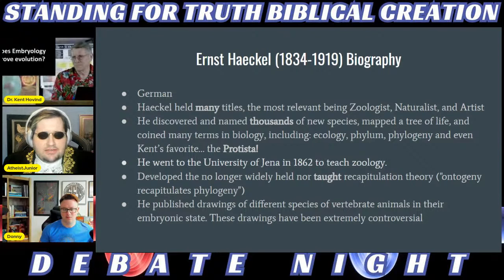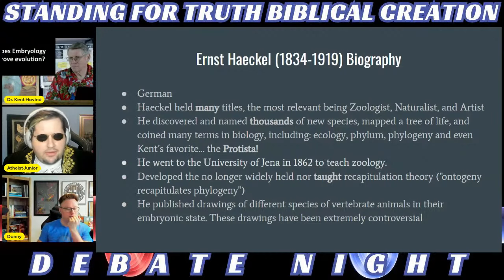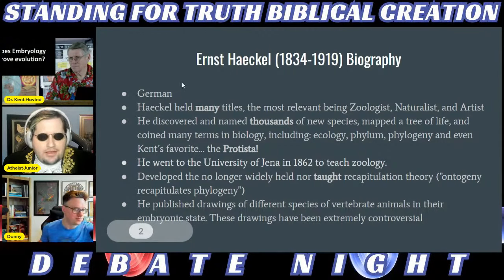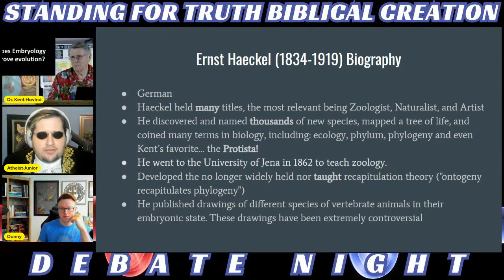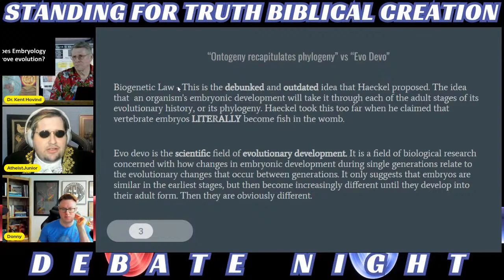Haeckel taught at the University of Jena in 1862 as a zoology professor, not an embryology professor. He developed the no-longer-widely-held recapitulation theory — ontogeny recapitulates phylogeny — and published drawings of different species of vertebrate animals in their embryonic state. These drawings became very controversial — really the most controversial images in the history of science.